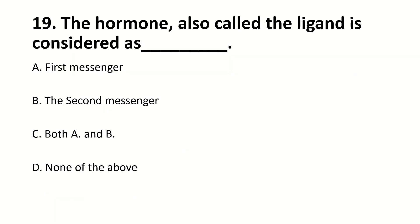The hormone, also called the ligand, is considered as dash. Right answer is A — first messenger.